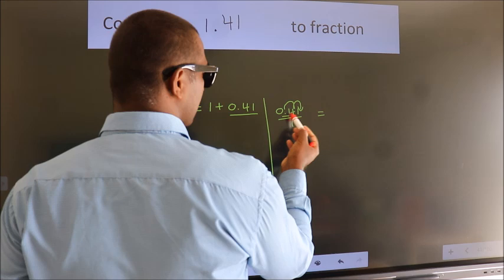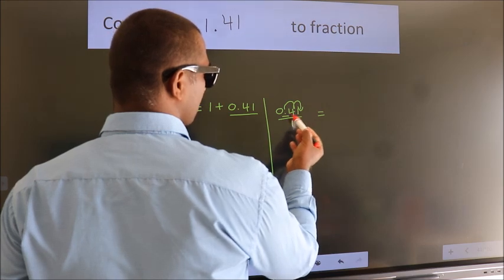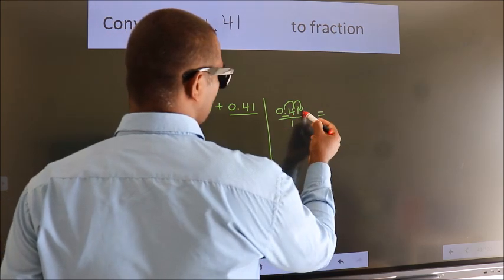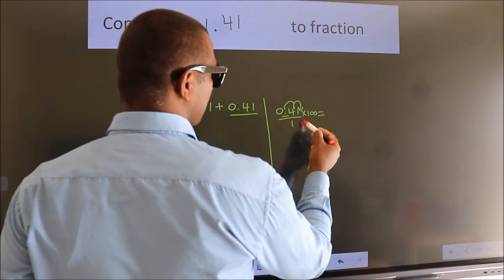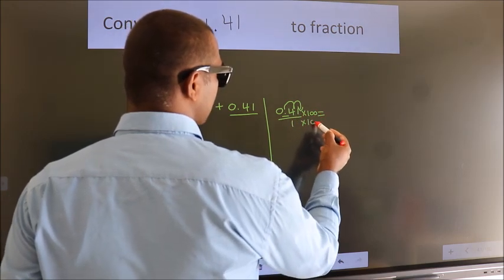To move the decimal after 2 numbers, we should multiply by 100. Whatever you do in the numerator, do the same in the denominator.